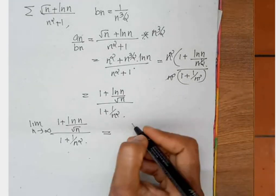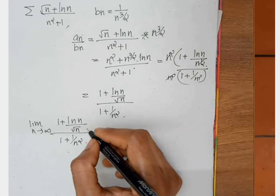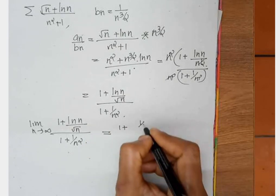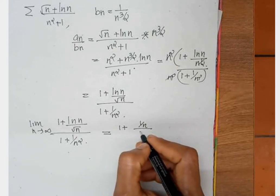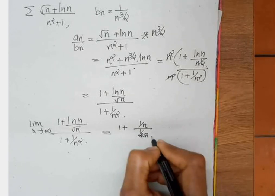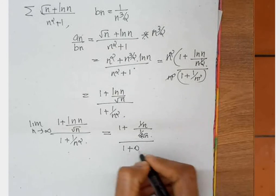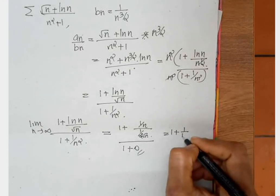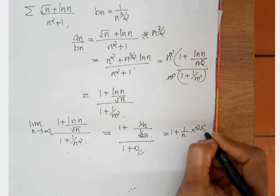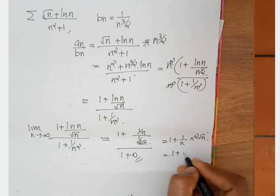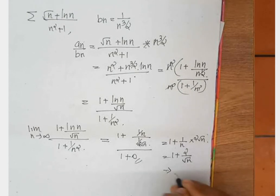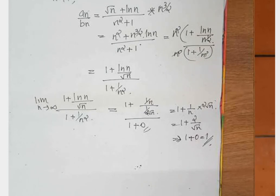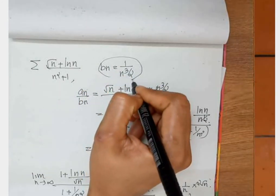The term log n / root n is of the form infinity over infinity. Applying L'Hôpital's rule: derivative of log n is 1/n, derivative of root n is 1/(2 root n). So the limit is (1/n) / (1/(2 root n)) = 2/root n, which goes to 0 as n tends to infinity. Therefore the limit of aₙ/bₙ equals 1, a positive finite value. Since bₙ = sigma 1/n^(3/2) converges (p = 3/2 > 1), the original series also converges.